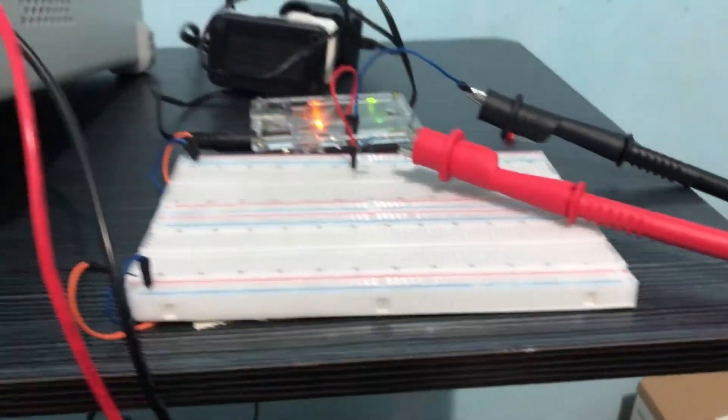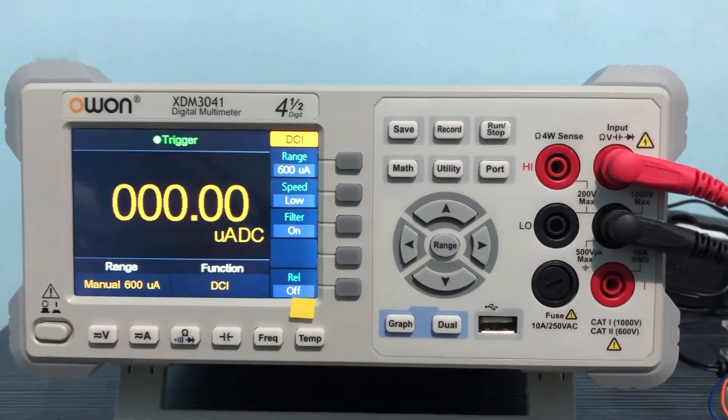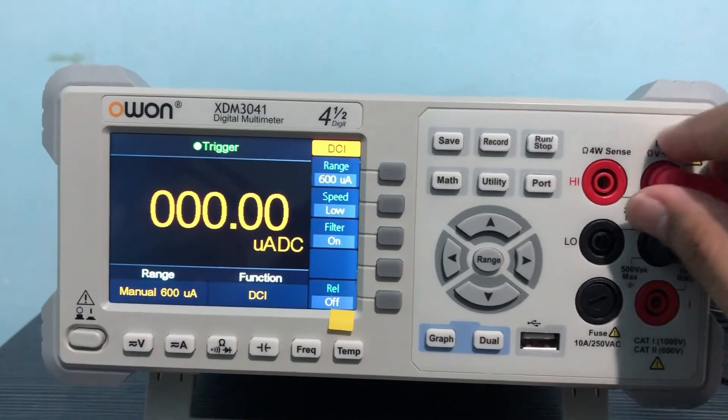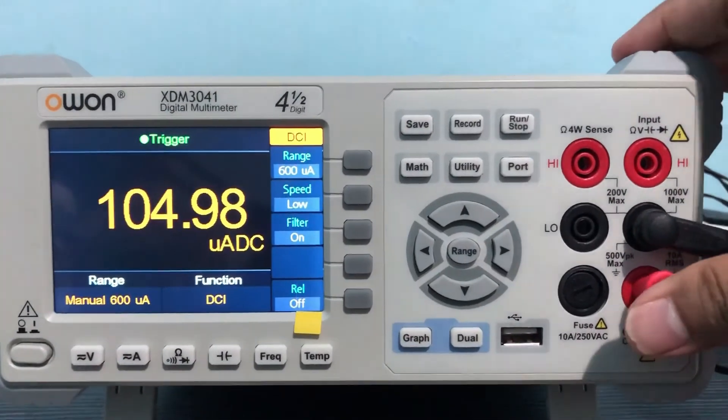Let's now try to measure DC current by connecting a resistor in the 5 volts DC terminals of the Arduino board. Let me remind you that your test lead should be connected in AC-DC current terminal.